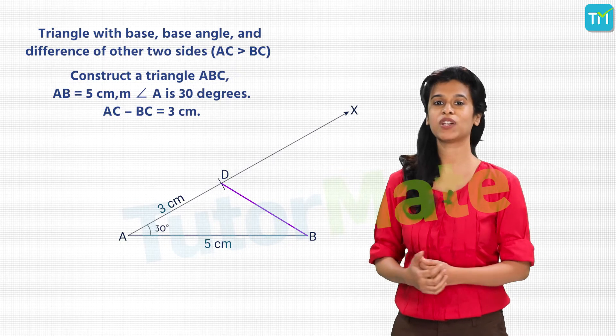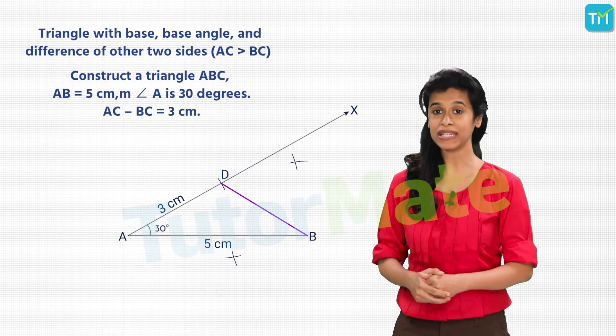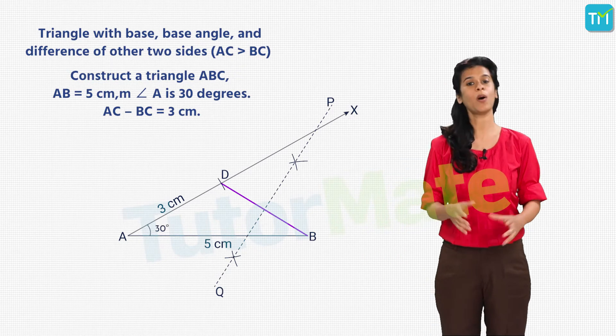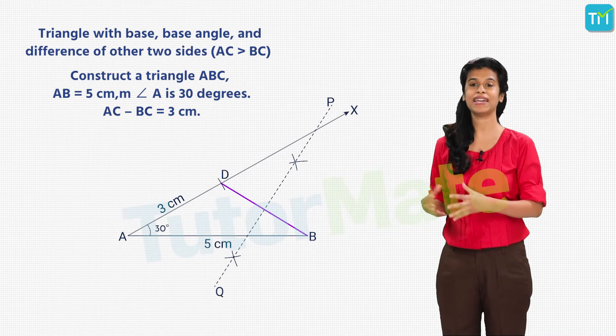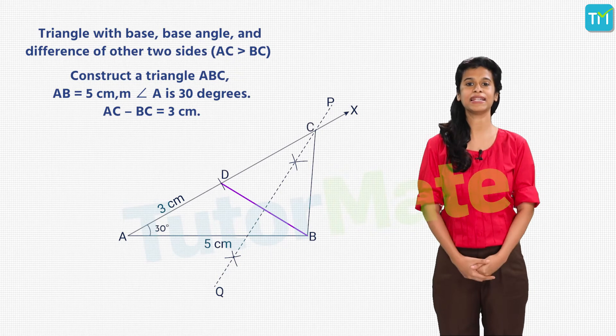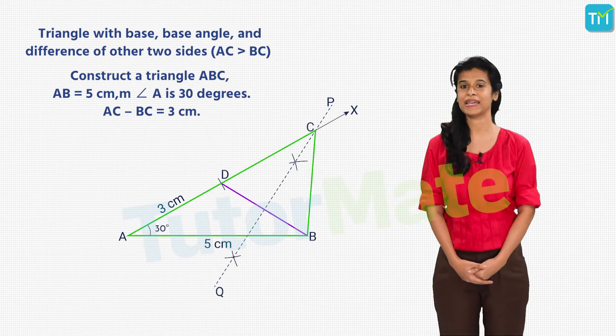Now, draw the perpendicular bisector of segment BD. Let PQ be the perpendicular bisector of BD. The point where PQ cuts ray AX is point C. We join BC and get our required triangle ABC.